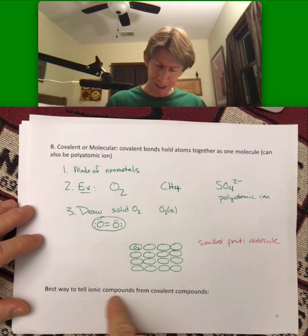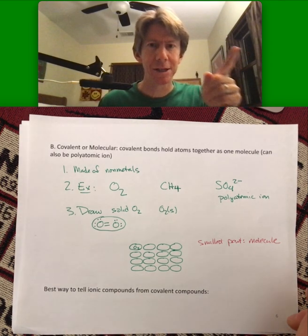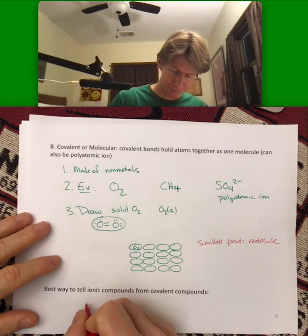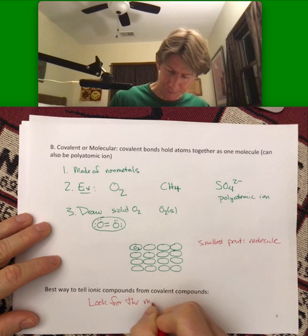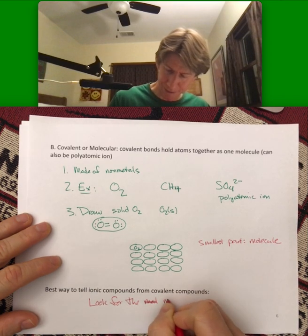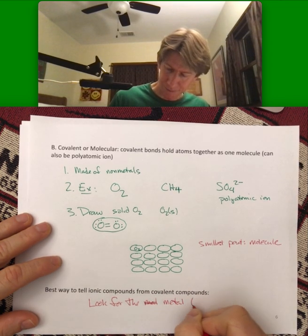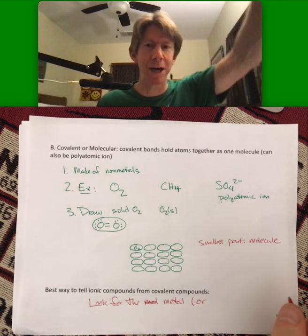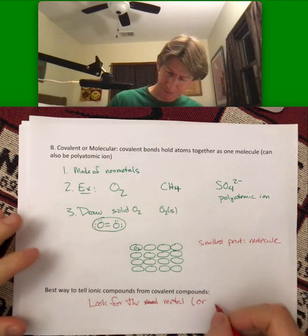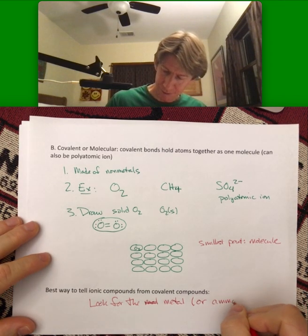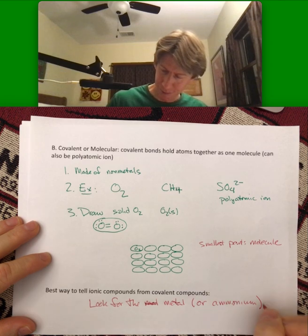Best way to tell ionic compounds from covalent compounds. Look for the metal. I feel like I'm saying, look for the metal or ammonium. It still gets an exclamation point because I still think it's the best way to do it.